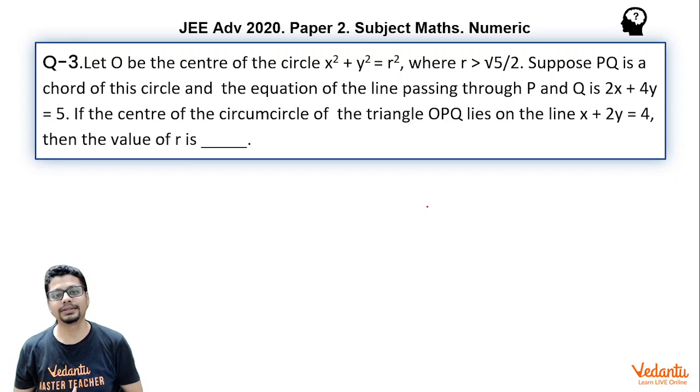Let O be the center of the circle x² + y² = r², where r is greater than √5/2. Suppose PQ is a chord of the circle and the equation of the line passing through P and Q is 2x + 4y = 5. If the center of the circumcircle of triangle OPQ lies on the line x + 2y = 4, then the value of r is.